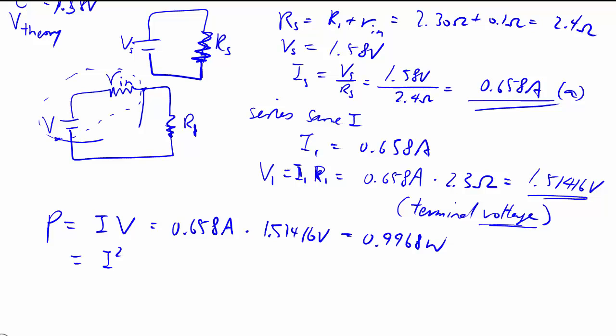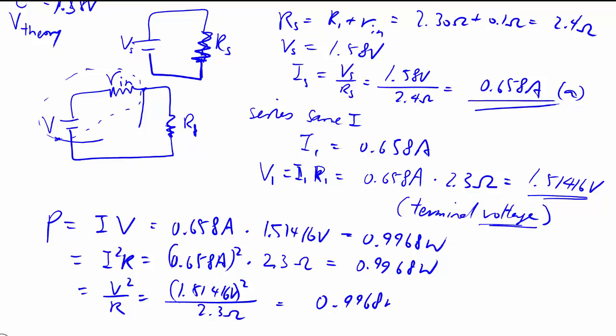We could also use I squared times R. Or even V squared over R. All exactly equivalent because we're just combining Ohm's Law. There's no way for this to be any different.